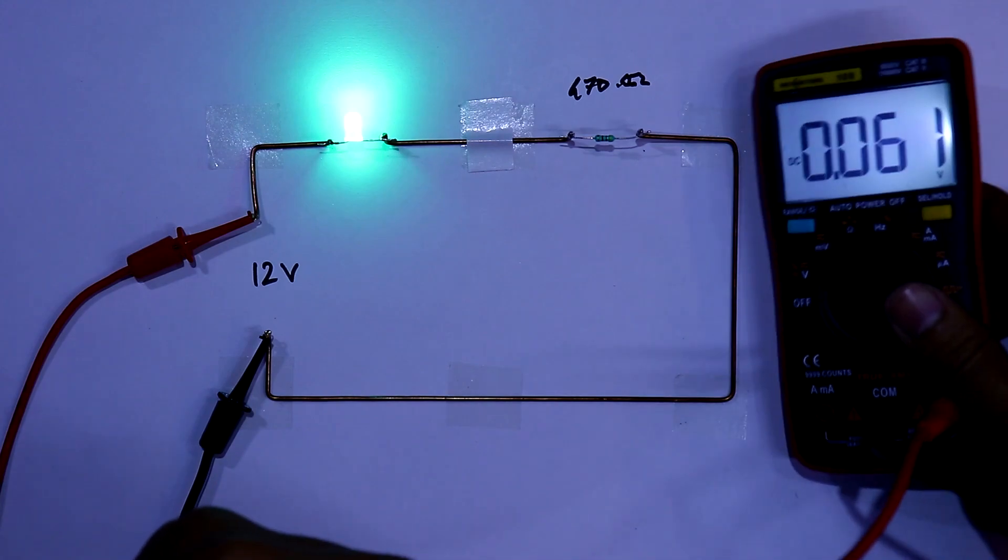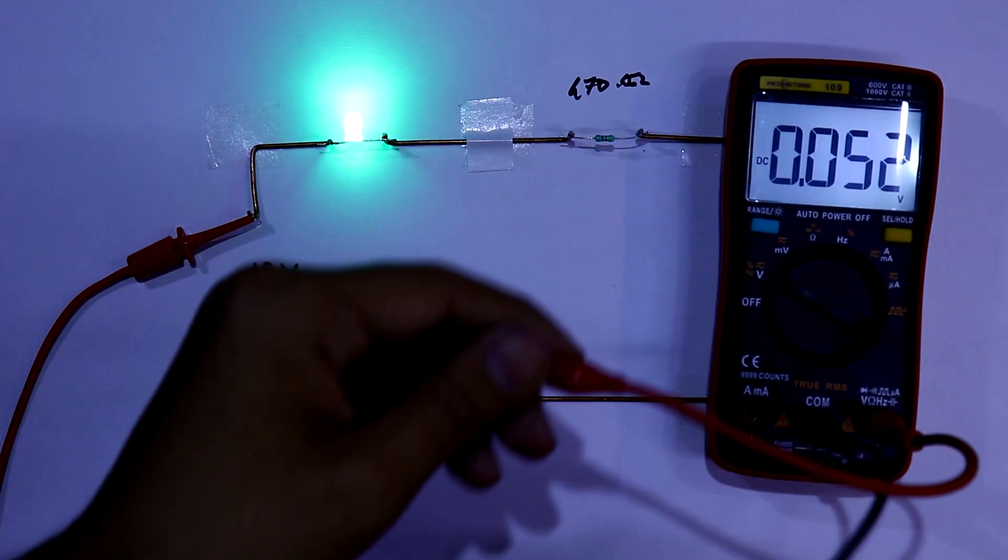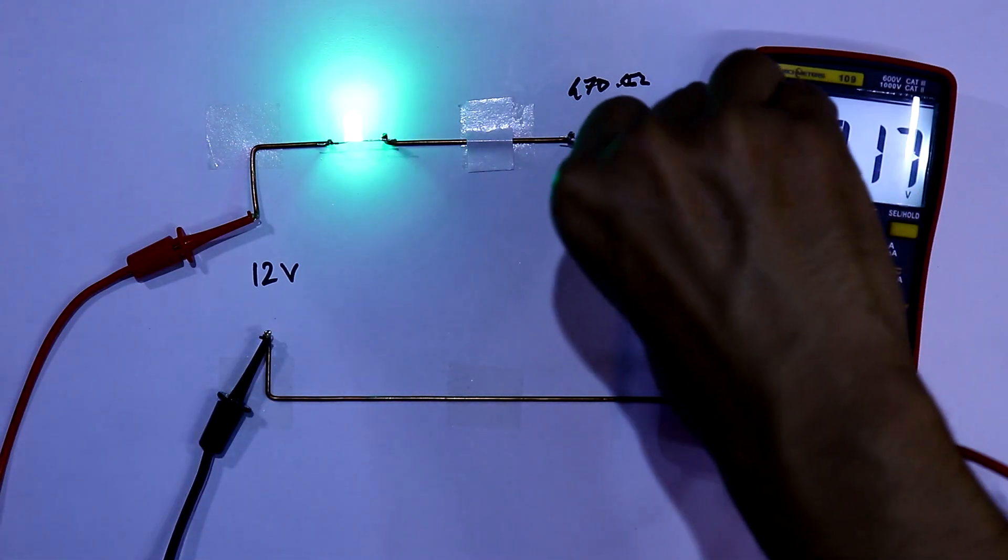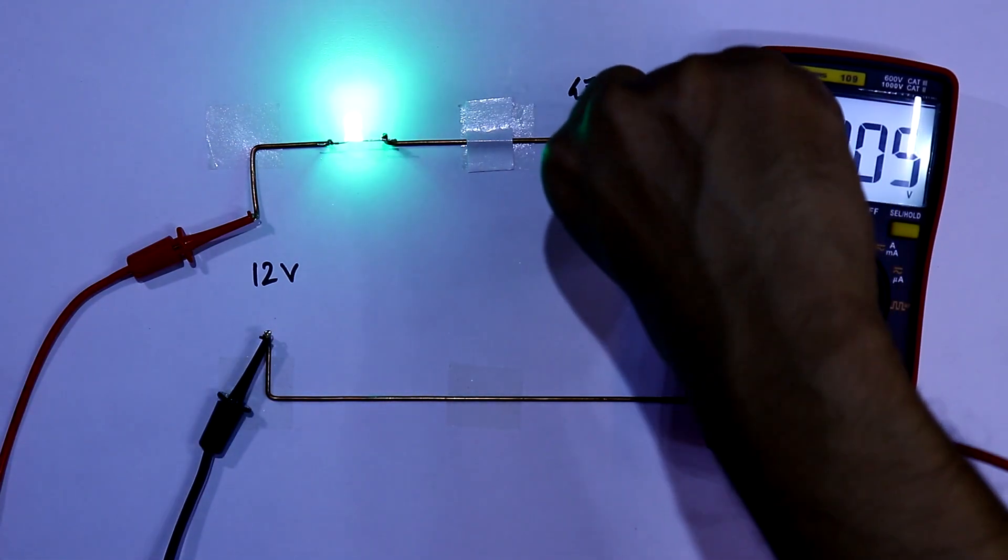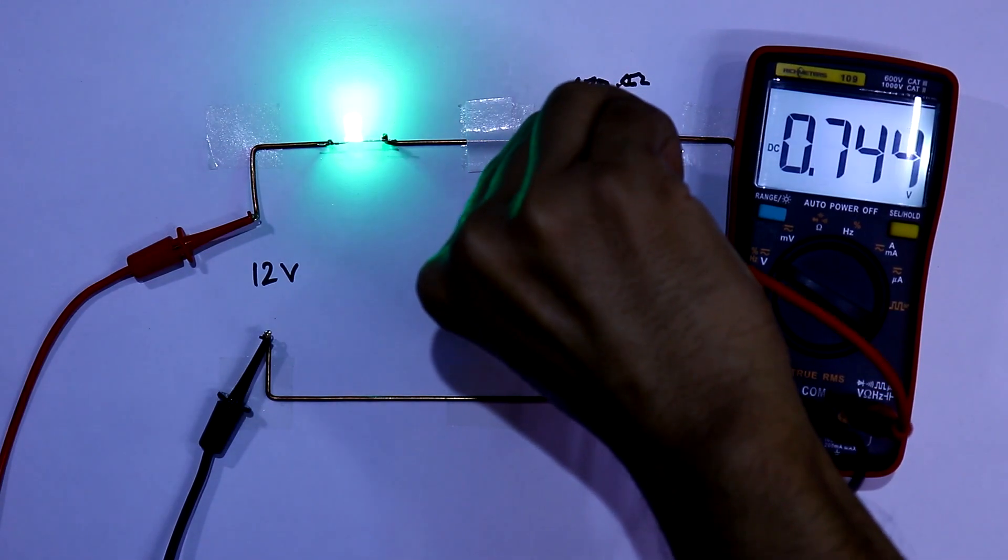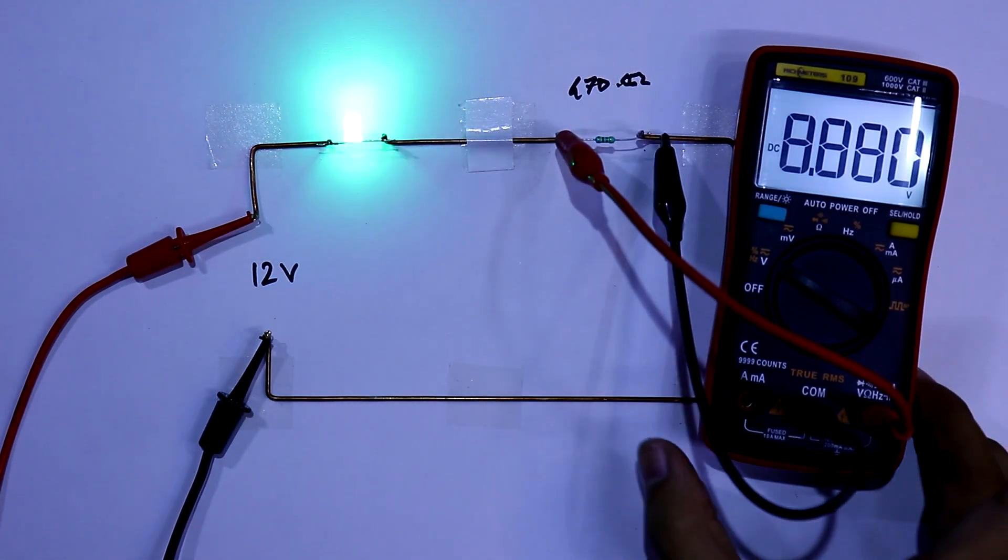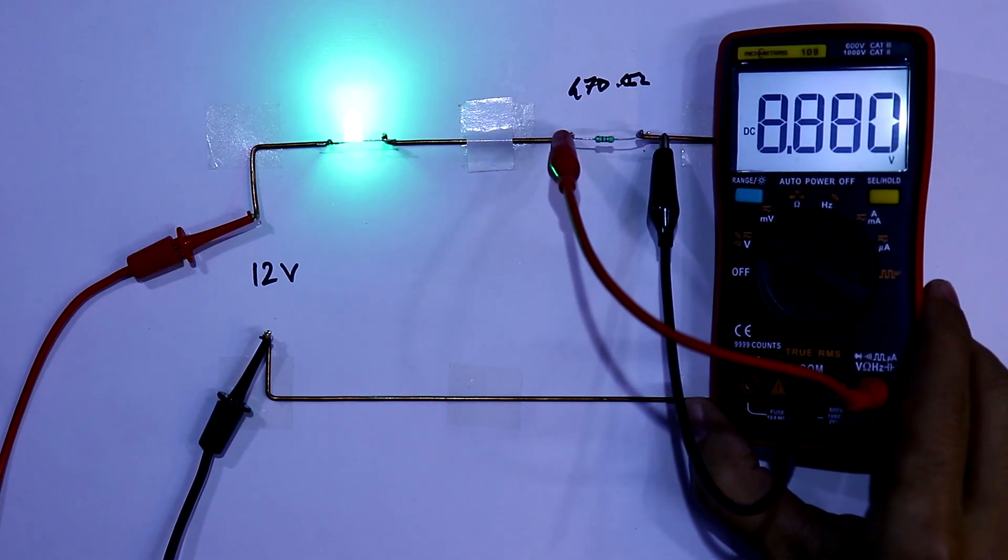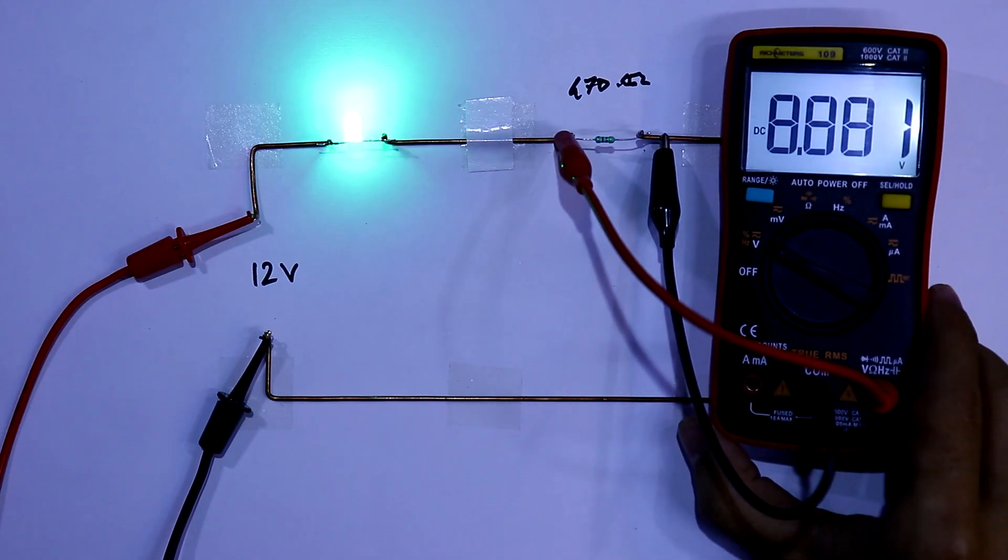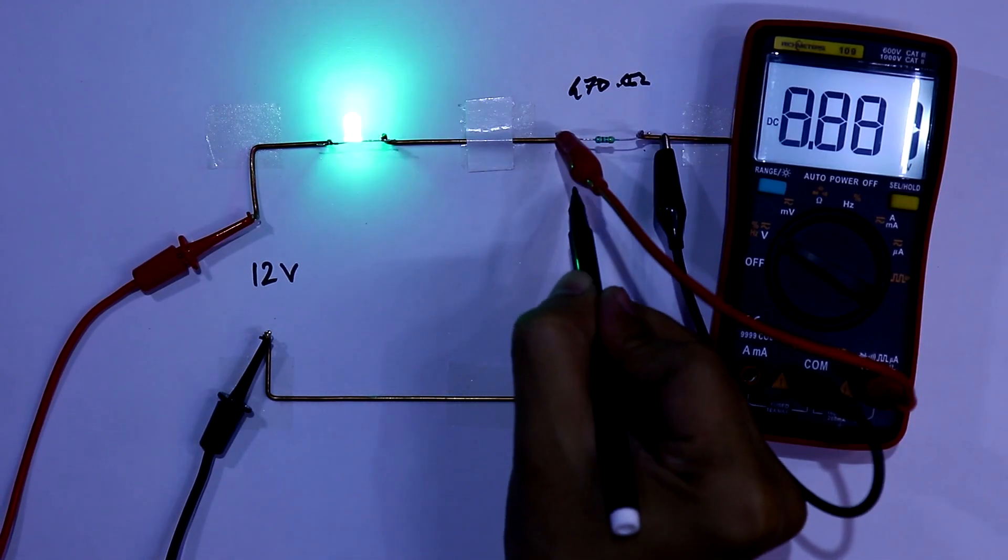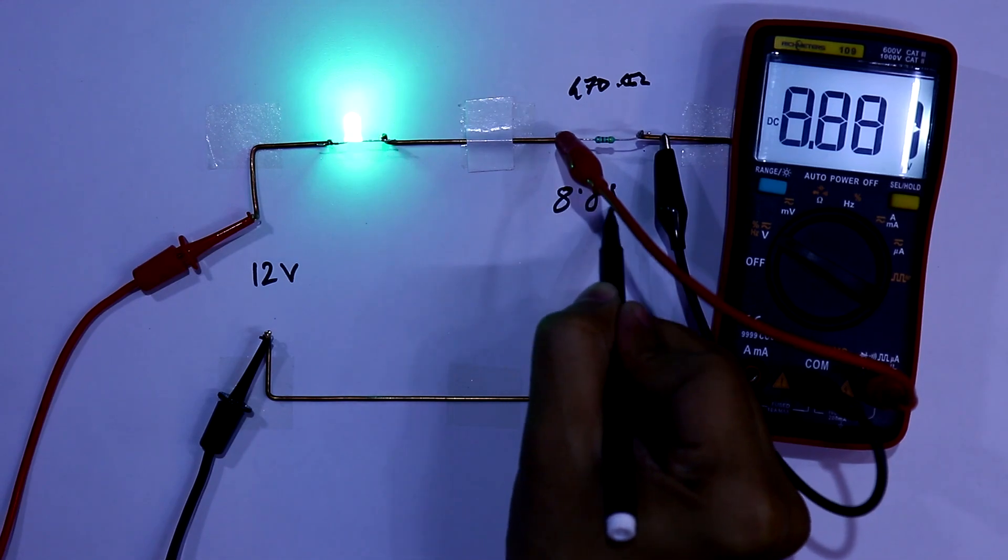Now if we want to know the voltage drop at resistor, we have to connect this negative pin here and the positive. It is 8.88, approximately 9V. According to our calculation. So the voltage drop is 8.88V.